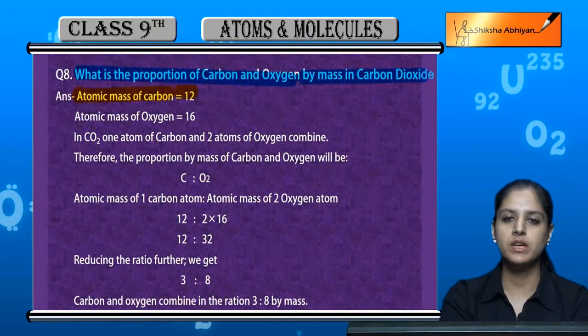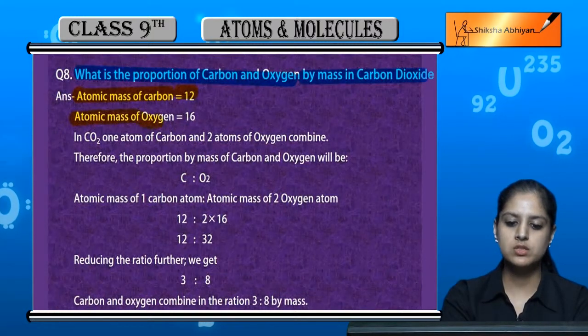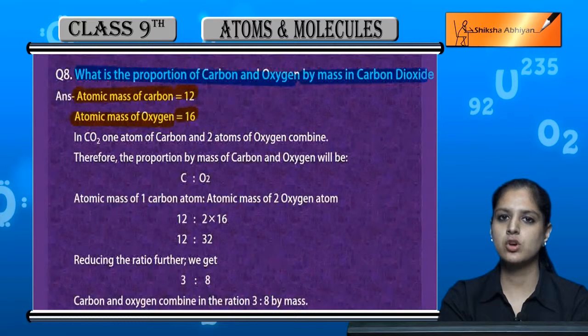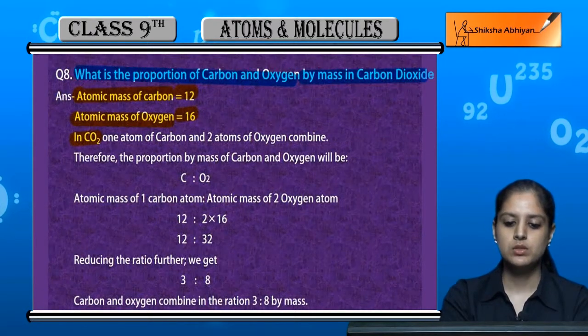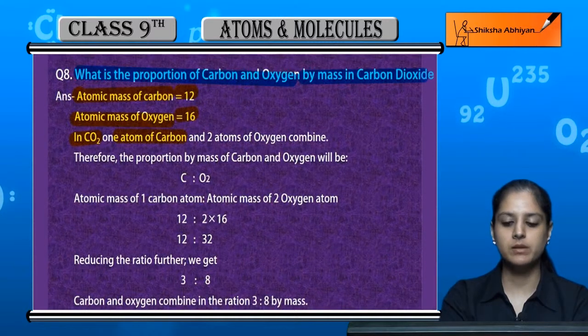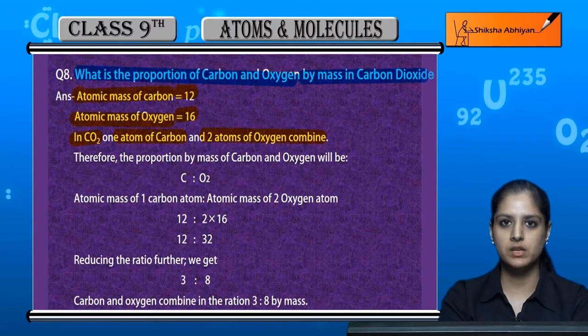Atomic mass of carbon is 12 and oxygen is 16. When we are talking about CO2, we have 1 carbon and 2 oxygen atoms.